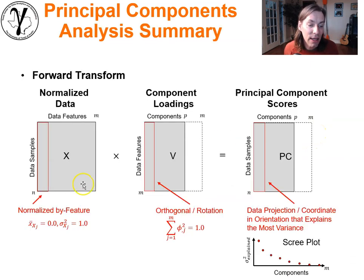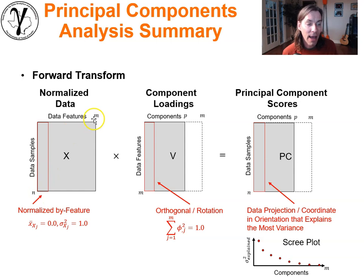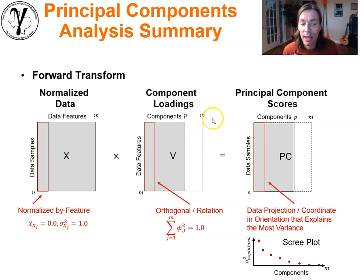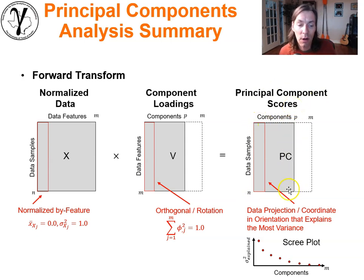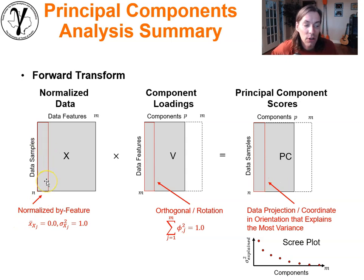For the forward transformation to get principal component scores, we take the n by m data matrix and multiply by the component loadings truncated to p — an m by p matrix. The result is an n by p set of principal component scores for our first p principal components. We normalize by feature to ensure variance equals one, and constrain so the sum of squares of component loadings equals one — it's a rotation.